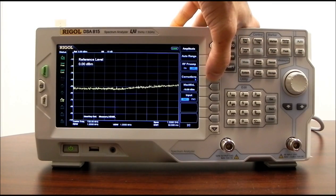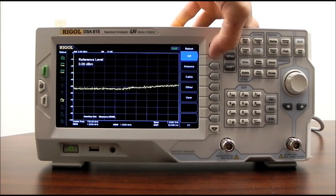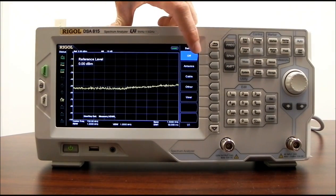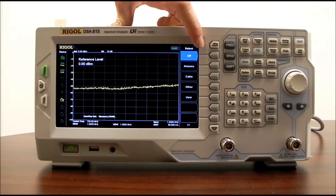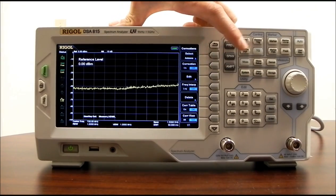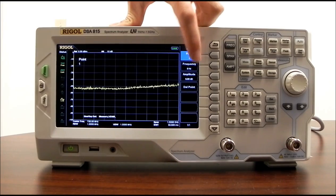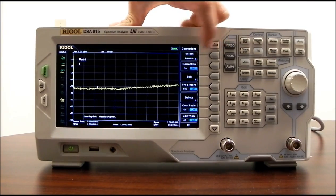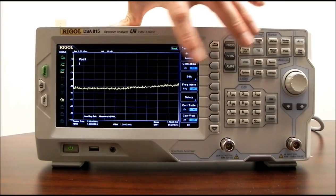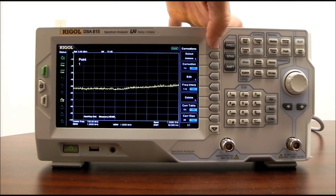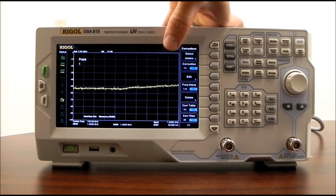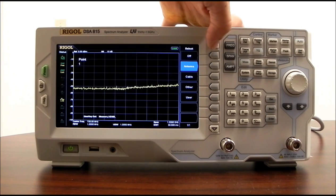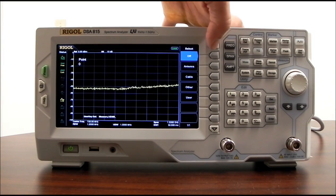We also have correction factors. Correction factors allow us to... Let's say we have an antenna that has gain or loss in a particular frequency range. We can then select antenna and we can edit and enter those frequency values and their amplitudes so that you can auto correct for any changes for the cabling or antenna or any other elements that you may have that you're testing. You can add those or subtract those values directly on the display by using the correction values, which can be extremely helpful as well.